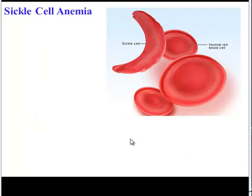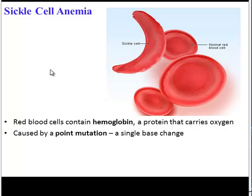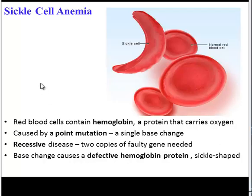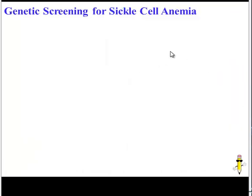So how can we use this technique to test for sickle cell anemia? Your red blood cells contain the protein hemoglobin, which carries oxygen. People who have sickle cell anemia have a point mutation — a single base change — in the gene that encodes hemoglobin. It's a recessive disease, so you need two copies of that single base change to have full-blown sickle cell anemia. This base change encodes a defective hemoglobin protein: the change in base sequence changes the amino acid sequence, which changes the shape into a sickle cell, which changes the function because these sickle cells get stuck in vessels and cannot transport oxygen efficiently. Since this disease is caused by changes in gene sequences, we can use gel electrophoresis to screen for it.